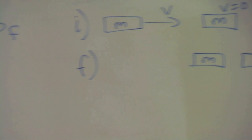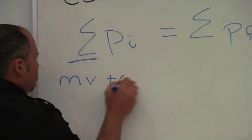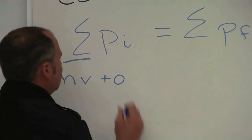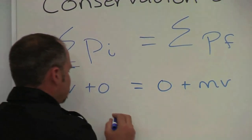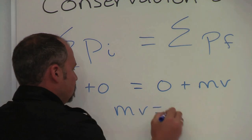Now let's check our momentum conservation. We have MV plus zero, we'll make this the positive direction. Equals zero plus MV. Excellent. Momentum's conserved.